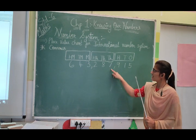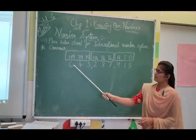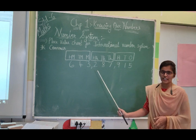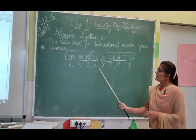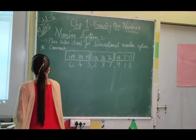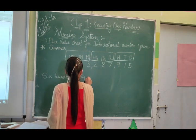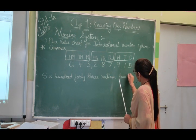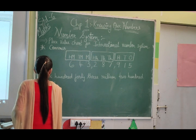So how do you read this number? We start from the left side. Starting with the first block of digits — suppose there are 3 numbers there, you read it as 643. In the International number system, the number is read as: 643,287,950. We write down the number name: six hundred forty-three million, two hundred eighty-seven thousand, nine hundred fifty.